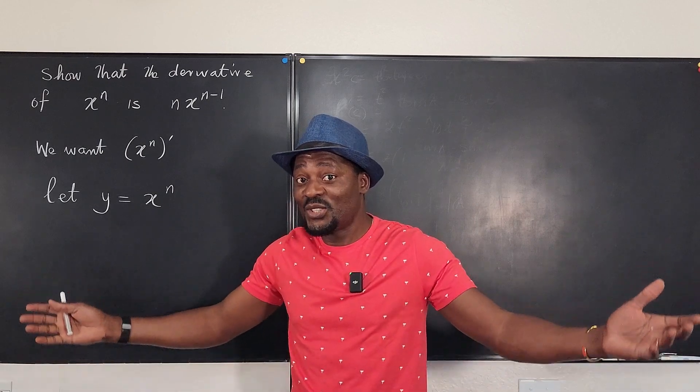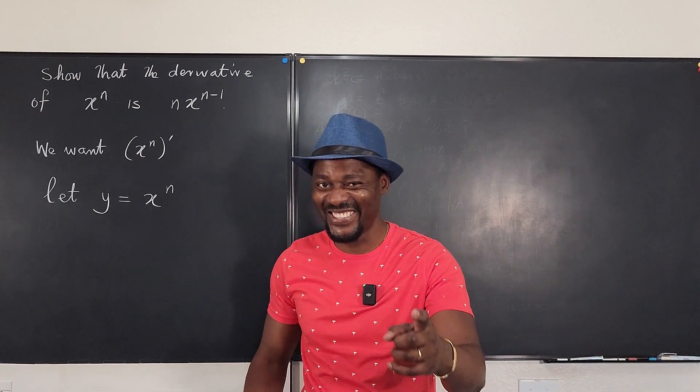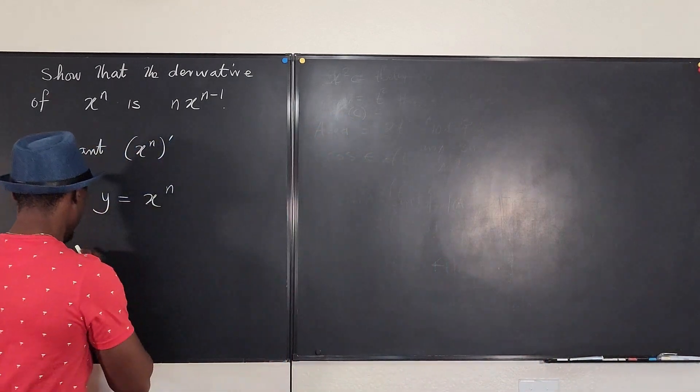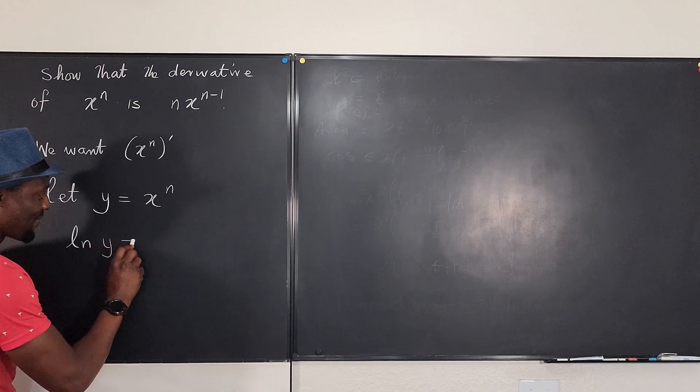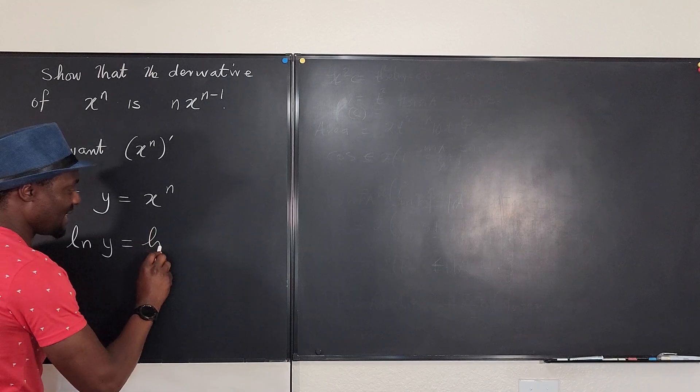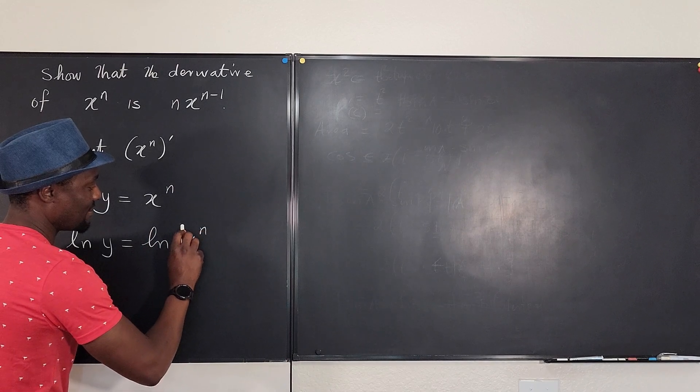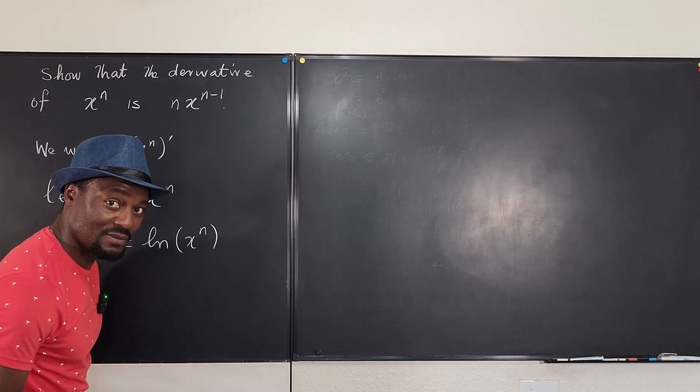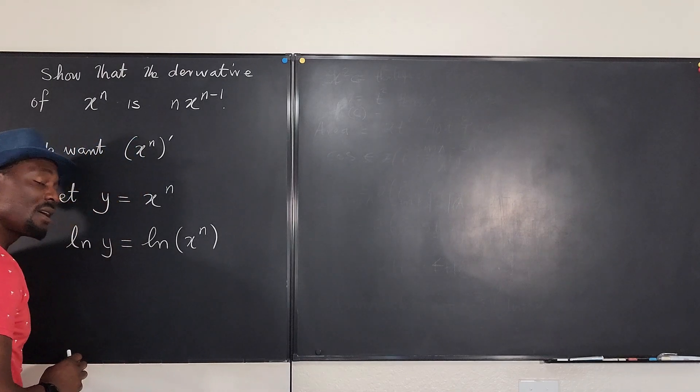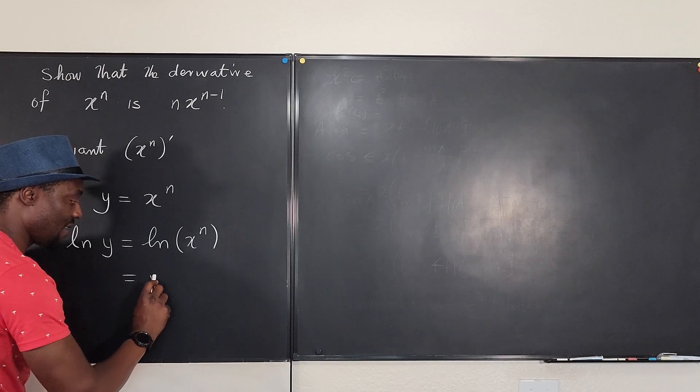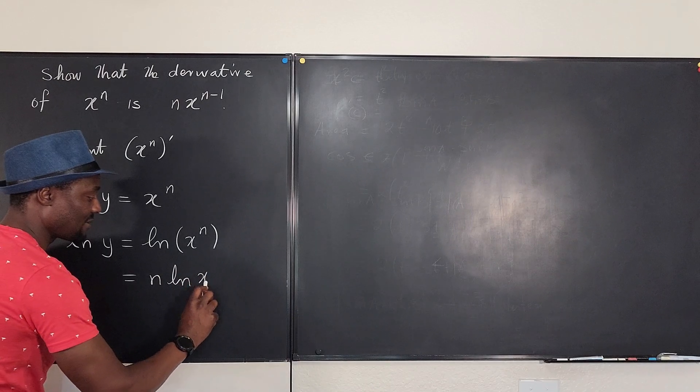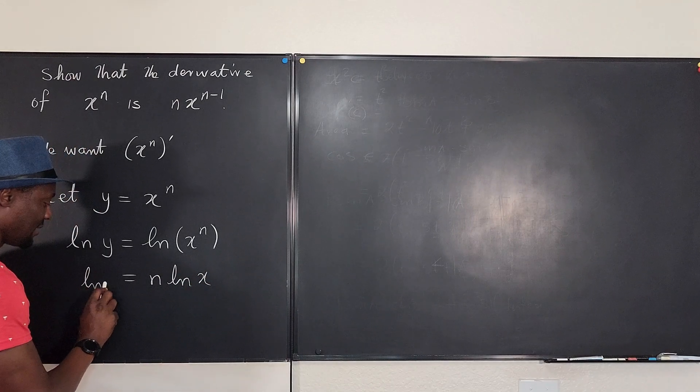Because y is just y. So see what I'm going to do: I'm going to say if I take the natural log of y, it means I'm taking the natural log of x^n. That's also true. What if I apply the law of logarithms and take this exponent down? It becomes n·ln(x), and this is still ln(y).